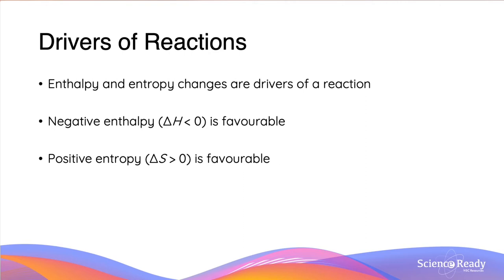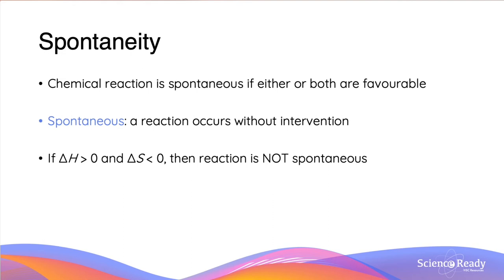We can also consider this concept of favourability in terms of enthalpy changes. Generally, reactions prefer to occur where the enthalpy change is negative, so a negative enthalpy change, or exothermic nature, is going to be favourable. A positive enthalpy change, or endothermic nature, is going to be unfavourable. Thus, our two drivers of reaction are negative enthalpy, which is favourable, and positive entropy, which is also favourable.